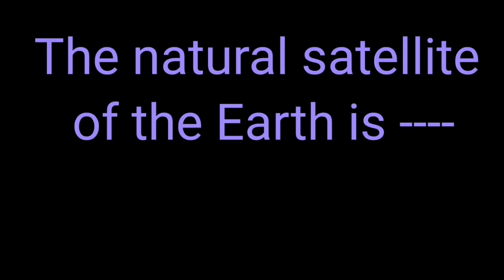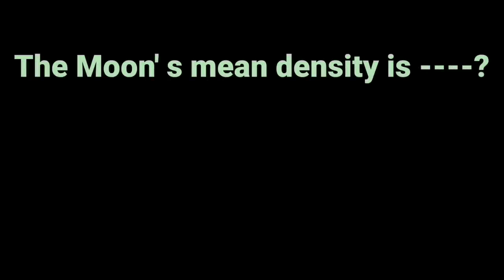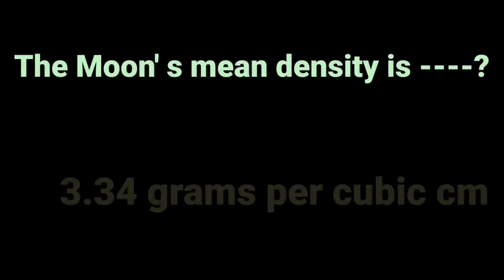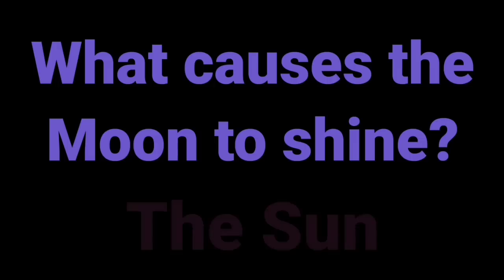The natural satellite of the earth is the moon. The moon's mean density is 3.34 grams per cubic centimeter. What causes the moon to shine? The sun.